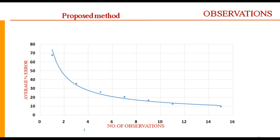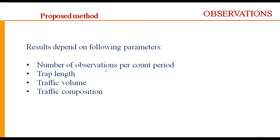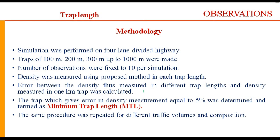The average percent error varies with the number of observations per count period. Results depend on number of observations, trap length, traffic volume, and traffic composition, so we studied the effect of each parameter on density. Since these parameters cannot be varied in the field, simulation was performed on a four-lane divided highway. Traps of 100 m, 200 m, 300 m, and up to 1000 m were made, with 10 observations per simulation. The trap length giving density error ≤ 5% was taken as the minimum trap length, and this was repeated for different traffic volumes and compositions.